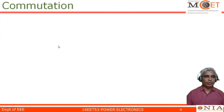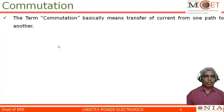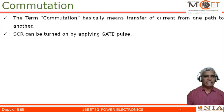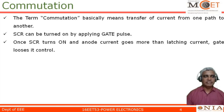Let us understand what is the meaning of commutation. Commutation basically means transferring of current from one path to another. In the case of SCR, we know that SCR can be turned on by applying the gate pulse. Once the SCR has been turned on, which means that if the anode current goes more than the current called as latching current, the gate loses its control.